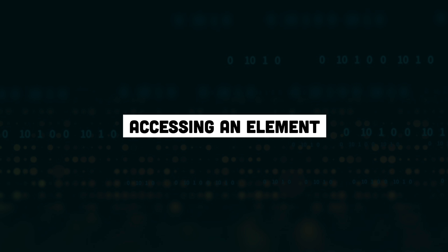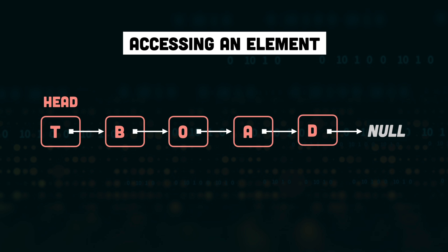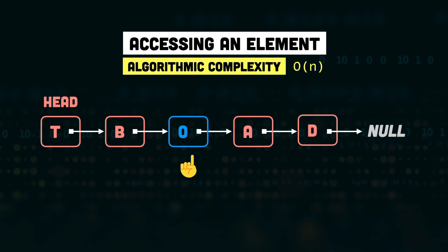Next we have accessing an element from the linked list. Say we need to access the third node — unlike arrays, we don't have indexes in a linked list, so we can't access the third element directly. We have to start with the first node and keep traversing until we reach the element we need. The complexity of accessing an element is linear, O(n). In arrays, that complexity was constant, O(1). This is one of the drawbacks of linked lists — accessing elements is much, much slower because you don't have an index or pointer to get directly to a node.